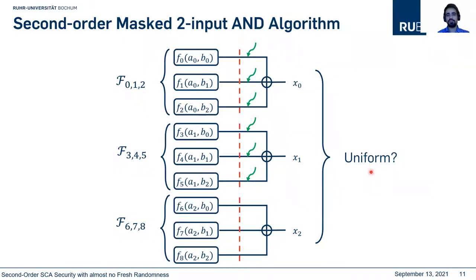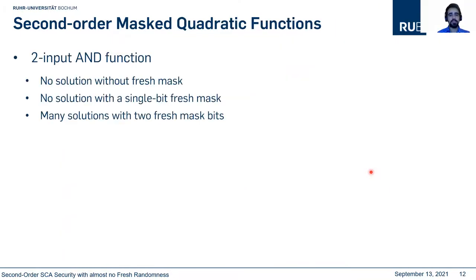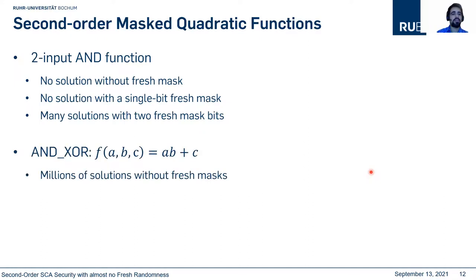As you can see, compared to first-order security, second-order requires way more checks and the complexity of the algorithm is pretty high. Applying this technique to a two-input AND gate without any fresh mask or with a single-bit fresh mask leads to no solution. However, we found many solutions with two fresh mask bits.